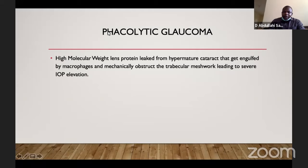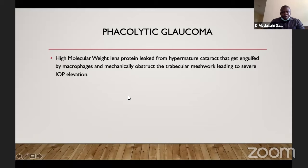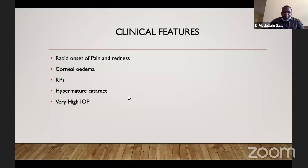Another form of secondary glaucoma is phacolytic glaucoma. In this type, there is liquefaction of the cortex and leakage of high molecular weight lens protein into the anterior chamber. The key here is that high molecular weight lens protein escapes from the lens into the anterior chamber, where it gets engulfed by macrophages. Together or individually, they block the trabecular meshwork, causing IOP elevation. Clinically, there is rapid onset of pain and redness in a patient with cataracts, corneal edema due to high IOP, keratic precipitates, and hypermature cataract.